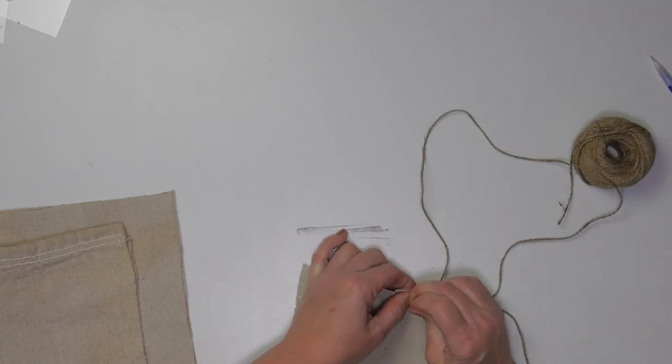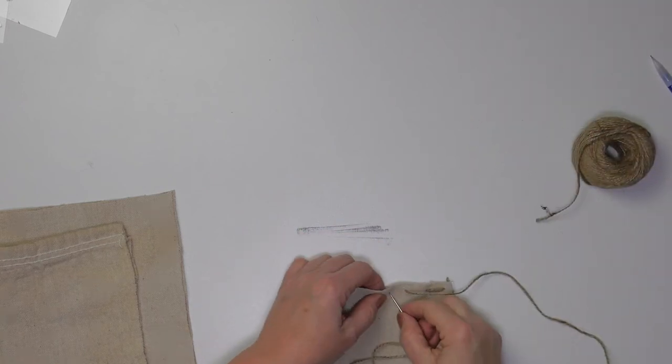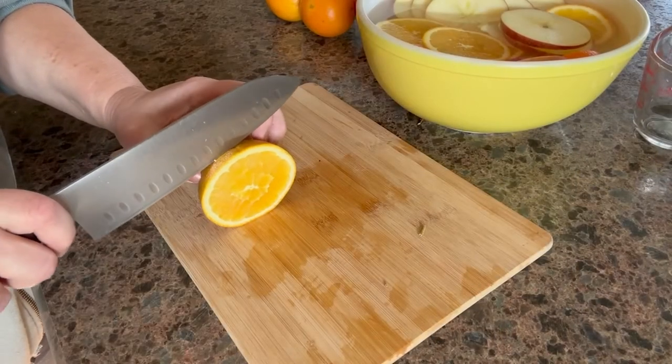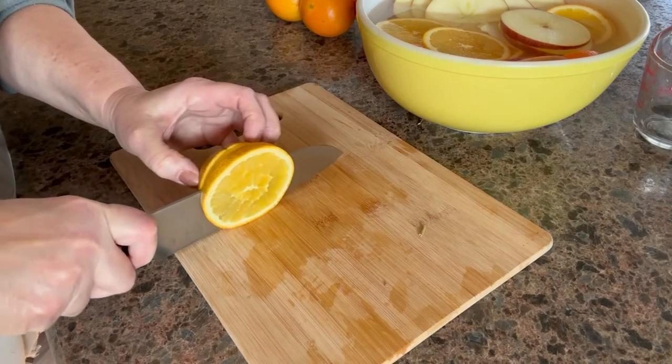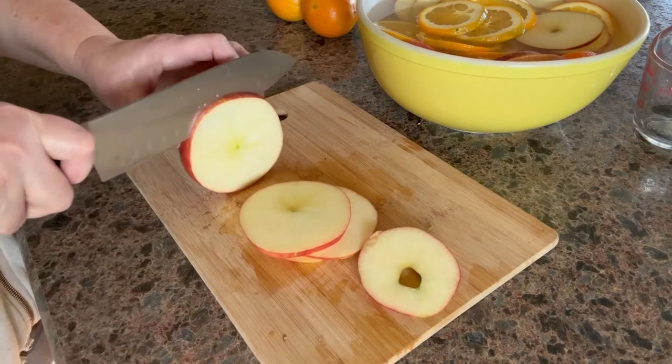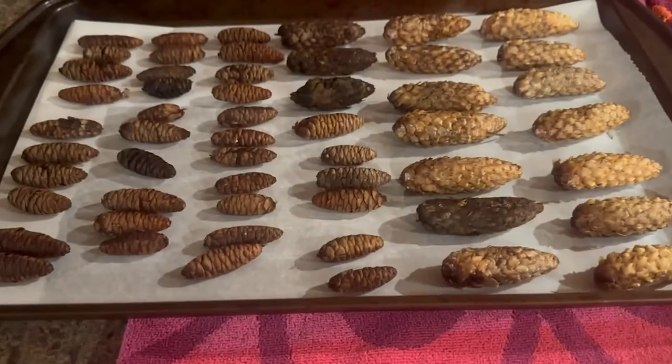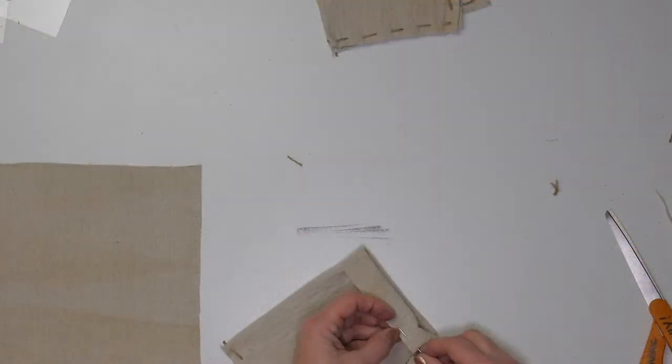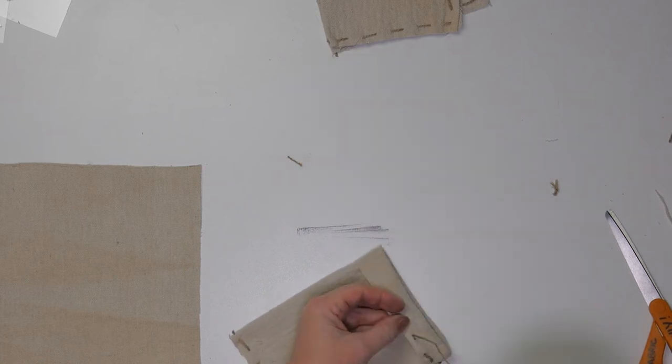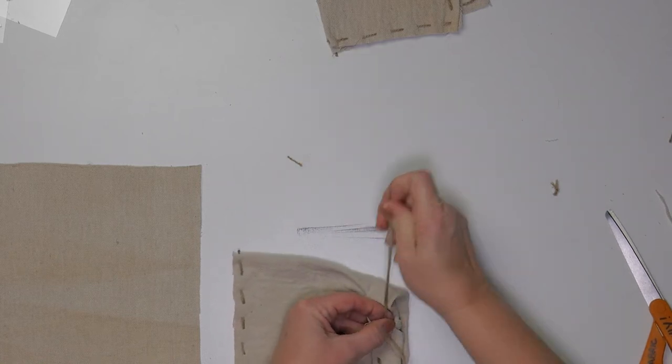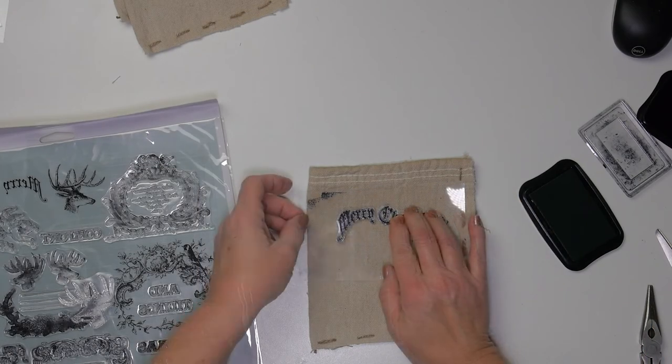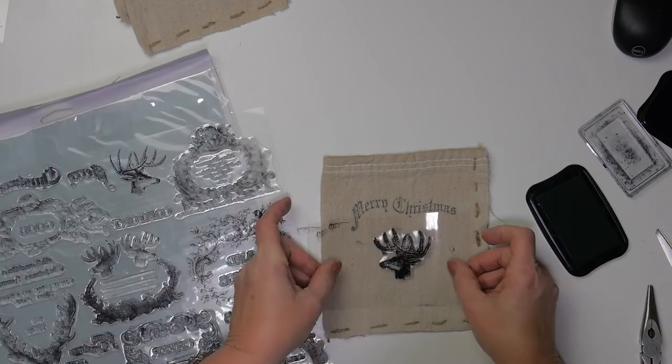And what I decided to do was make a potpourri mix that someone can use for a simmer pot, or they can just leave it in their bag and hang it on the doorknob so it smells really nice when people walk in the door. And on another video, I show you how I dry the fruit and the pine cones and what I'm going to use to put in the bags. I have some star anise, some cinnamon, some whole cloves.